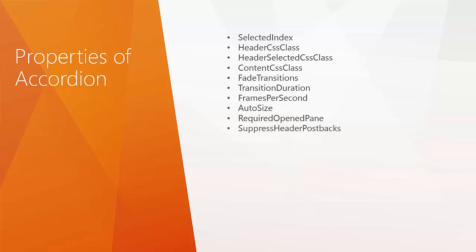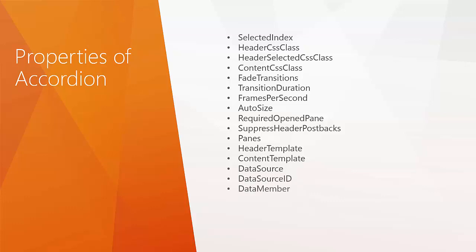We have a property called Suppress Header Postbacks, which suppresses postbacks when you click on the header by raising some client events. We have a property called Panes to maintain the collection of accordion panes. We have two templates: a header template and a content template. For working with the accordion with a database, we can use the Data Source property, set the Data Source Control ID, and set the Data Member. These are all the properties that can be used with the accordion.